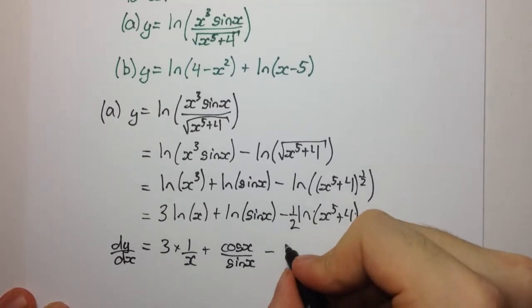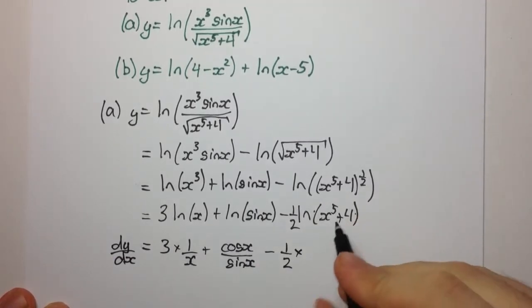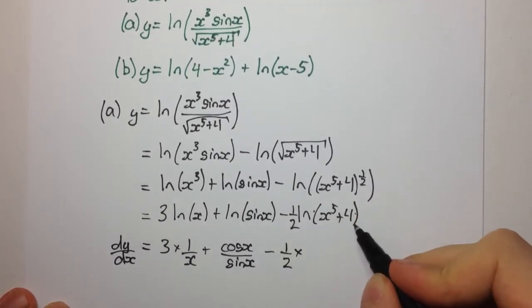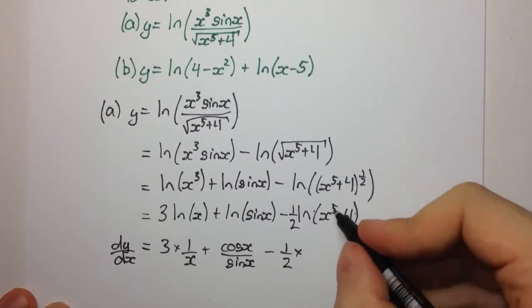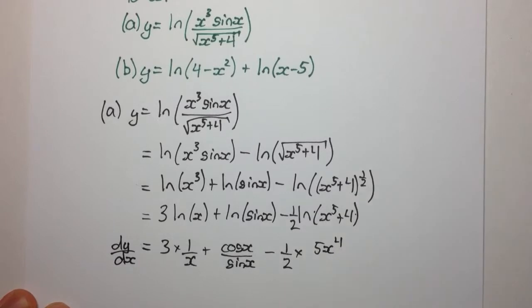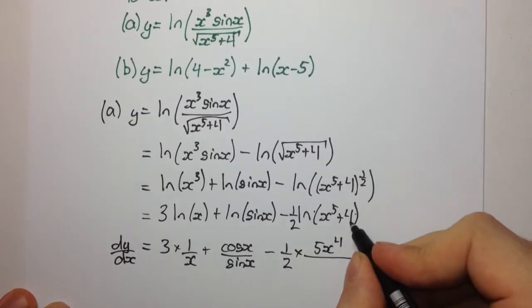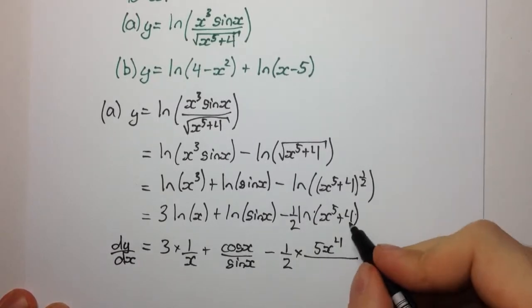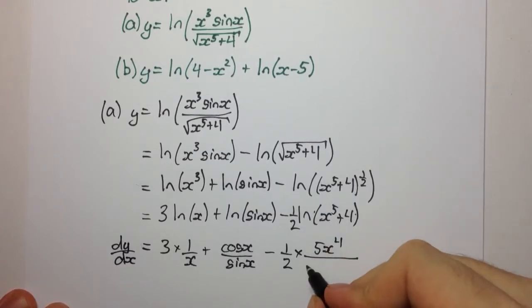And here, we're going to have 1 half multiplied by the derivative of x to the 5 plus 4, which is going to be... bring down the power, it's going to be 5x to the 4. Of course, when we differentiate 4, it's 0 because it's just a constant, divided by the original one, x to the 5 plus 4.